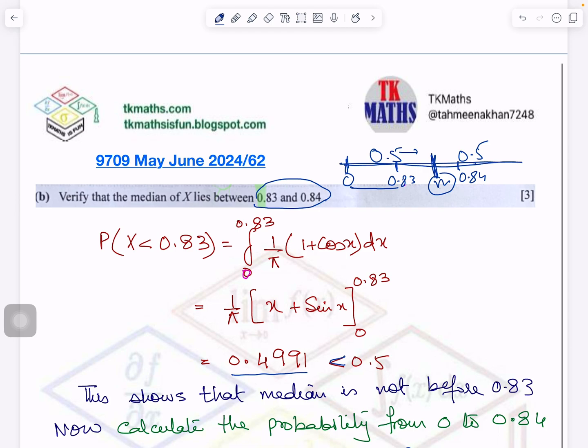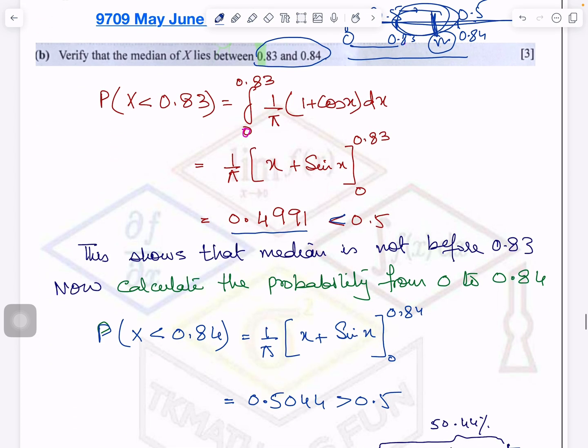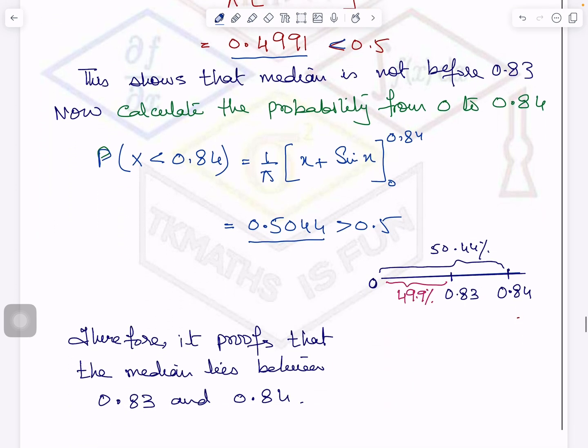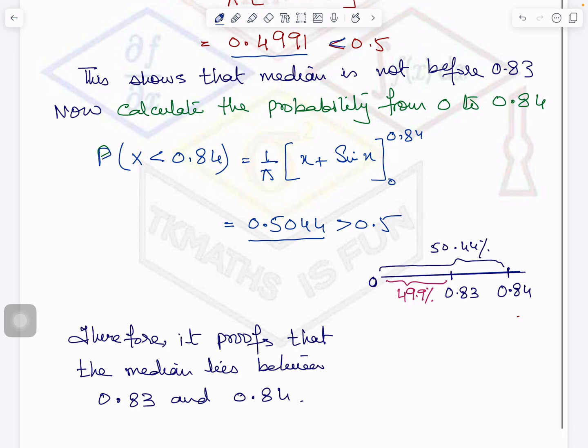Now what you will do? It is easy to understand now. Now I will do from 0 to 0.84. And my answer has to be more than 50%. If my answer is more than 50%, it means median is lying here. So now I am doing it here. And my answer is 50.44%. So this proves that the median is lying between 0.83 and 0.84.